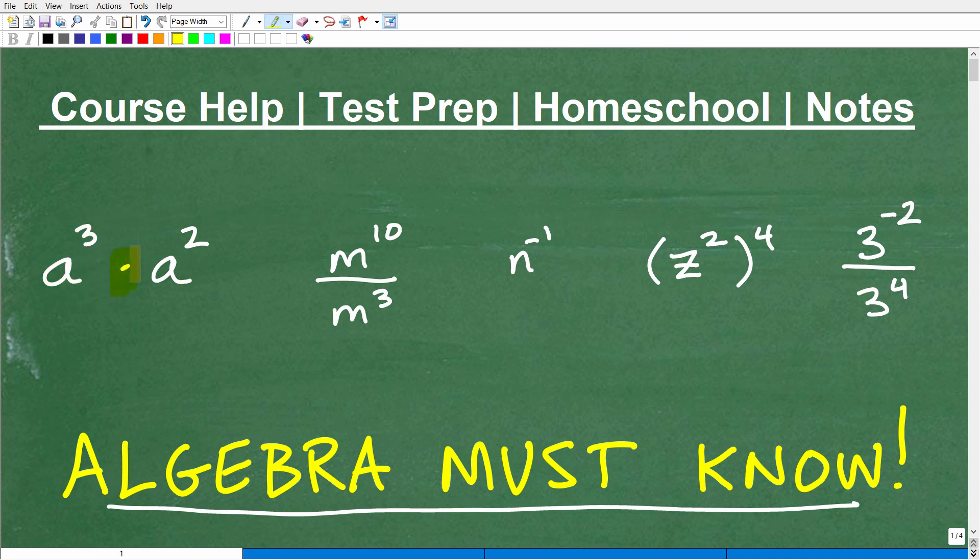Here we're multiplying powers. Here we're going to divide powers. And then we've got to figure out what to do with negative powers. And then what happens when we take a power to a power? Then here we can even have numbers to certain powers. We've got to be able to simplify things like this. So I'm going to cover each one of these here in just one second. But first, let me quickly introduce myself.